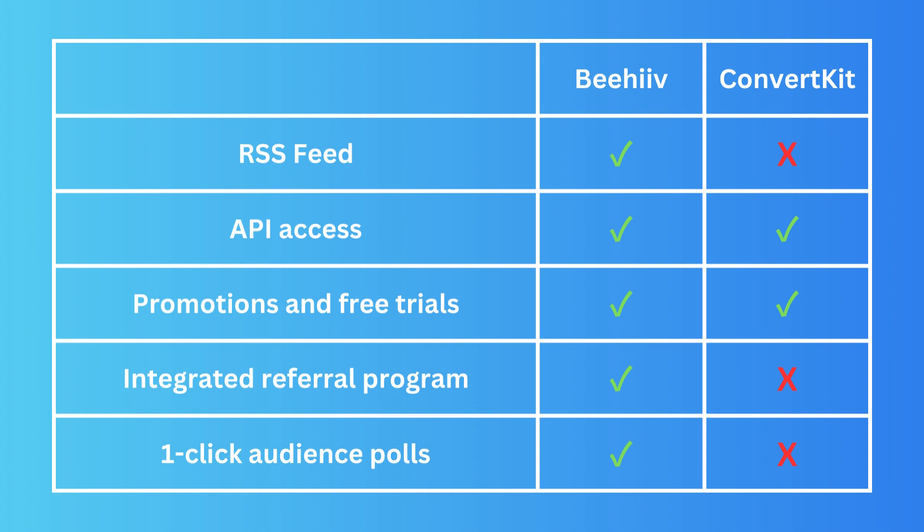For the integrated referral program, ConvertKit does not have a well-integrated one — they sort of have an affiliate or referral program but it's not integrated well. Beehive has one. One-click audience polls are really nice in Beehive — you can add a poll very easily with just one click. People can click within the email to make a choice, for example 'Do you prefer Apple or Samsung?' and you can easily view the poll analytics. ConvertKit does not have that option.